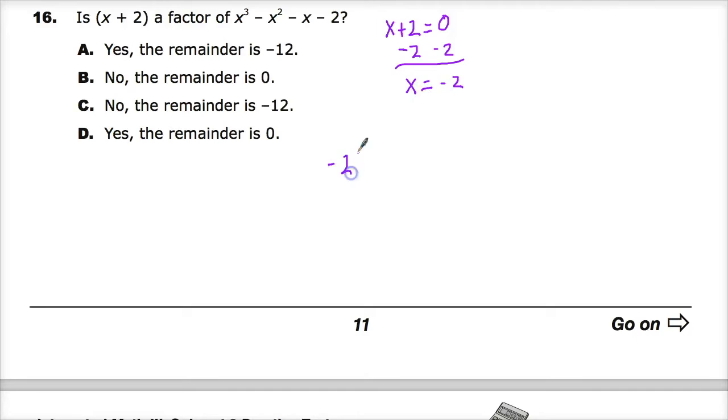So that will go here. One, negative one, negative one, negative two. Let's bring the first one down and then do one times negative two, which gives you negative two. Combine this together, get negative three.